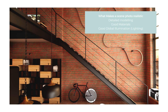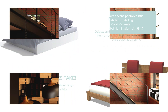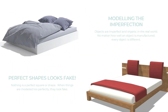Today we're going to continue with what makes a scene photorealistic. In this tutorial we're going to go through three very simple concepts: detailed modeling, good materials, and good lighting control in Unreal Engine.